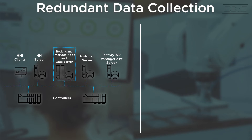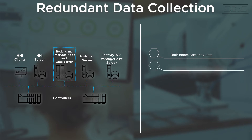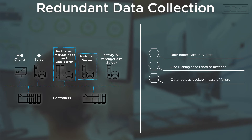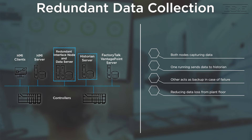We can take that a step further and make those interface nodes redundant. Both interface nodes are capturing data from the controller, and the one that is available and up and running is the one actually communicating data to the historian. If that interface node fails, the other one immediately picks up and takes over sending data to the historian, thereby reducing or eliminating data loss from the plant floor. When you're talking about digital transformation, this data will grow to become invaluable — it creates great disruptions without it. As you progress down your digital transformation journey, this is something you have to think about long term. Historian SE helps address that with redundant interface nodes.